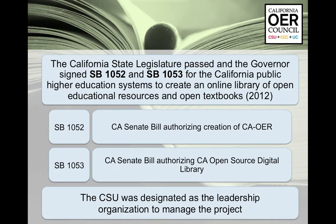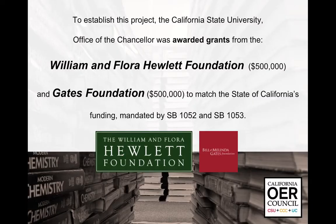We've been in the works since 2012, got complete funding by December 2013, and by January 2014 nine members were assembled. We were assigned to state bills SB 1052 and SB 1053 to create two things: SB 1052 authorized the creation of the council itself, and SB 1053 was to create an open source digital library. The CSU was designated as the leadership organization, and the Chancellor's Office was awarded $500,000 from the Hewlett Foundation and $500,000 from the Gates Foundation to match the state's funding.